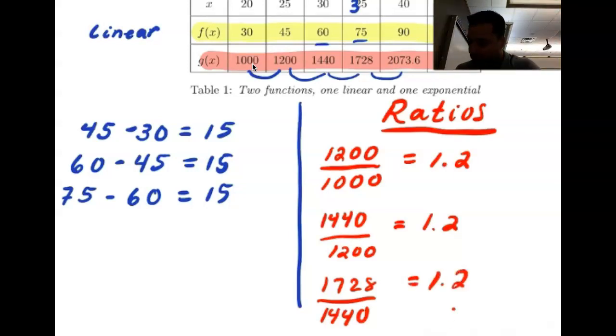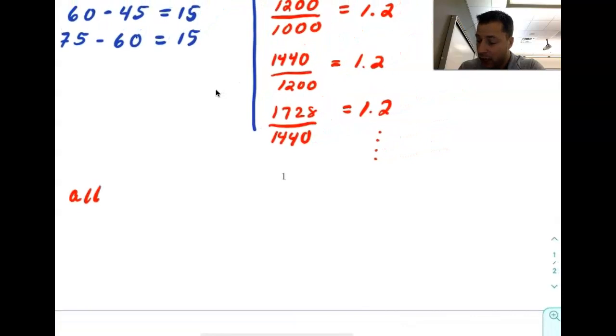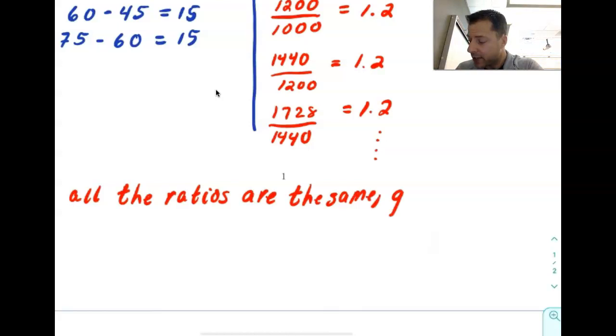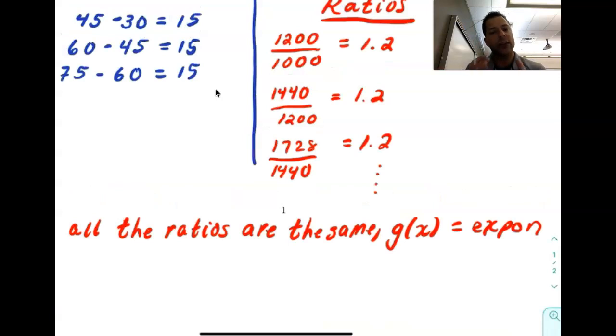And I'm going to tell you that that trend will continue. So because all the ratios are the same, g of x is exponential. In order to determine if a table of values is exponential, you are going to divide. You are going to take the ratios. And if all of those ratios are the same, you know you have an exponential function.